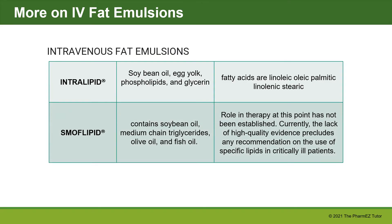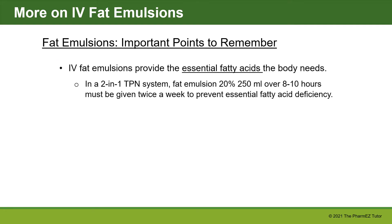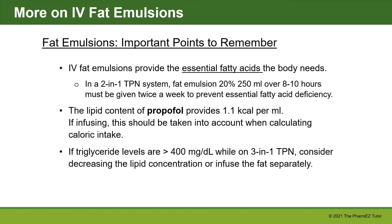Another IV fat emulsion is smoflipid, which contains soybean oil, medium-chain triglycerides, olive oil, and fish oil. The role of smoflipid in therapy has not been established, and currently the lack of high-quality evidence precludes any recommendation on its use in critically ill patients. IV fat emulsions provide the essential fatty acids the body needs. If using a 2-in-1 TPN system, fat emulsion 20%, 250 mL, must be given twice a week to prevent essential fatty acid deficiency. The lipid content of propofol provides 1.1 calories per mL and should be accounted for when calculating caloric intake. If triglyceride levels exceed 400 mg/dL while on a 3-in-1 TPN, consider decreasing the lipid concentration or infusing fat separately.